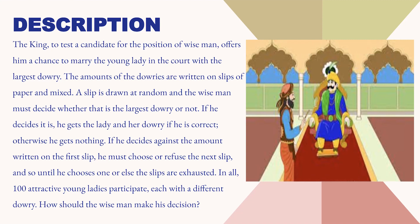But if he doesn't choose a slip and moves on to the next slip, then he has to choose or reject the next slip. This process goes on until all the slips are exhausted. In this problem there are a total of 100 ladies with different dowry amounts. So how should the wise man make his decision? This is the question.